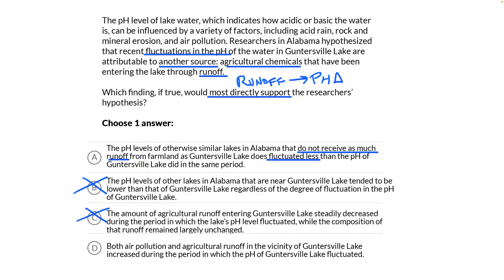Choice D: both air pollution and agricultural runoff in the vicinity of Guntersville Lake increased during the period in which the pH of Guntersville Lake fluctuated. If these polluting inputs both increased and the pH level in the lake fluctuated, this would actually weaken the hypothesis, and that's not what we want. Goodbye, choice D. Once you've got that test phrase — that support for the hypothesis — you can just rocket through the choices.